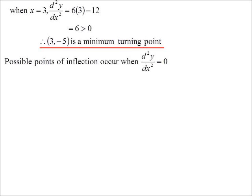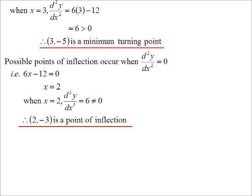Let's find a possible point of inflection. Again, as I say, this is a continuous curve, so logically, one must exist between those two turning points. But let's solve it. Second derivative equal to zero, we get x equals two, and when x equals two, the third derivative is six. Well, it's always six. It was a constant. But that's not equal to zero. So yes, two negative three is a point of inflection.